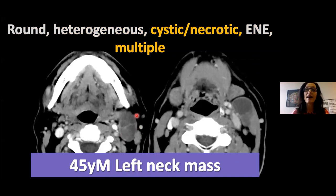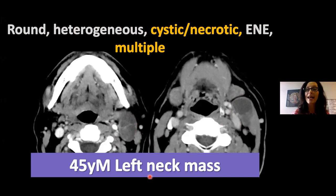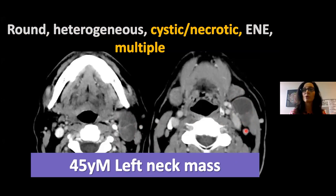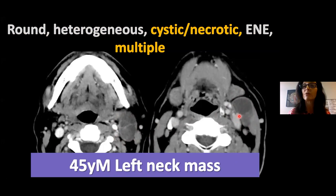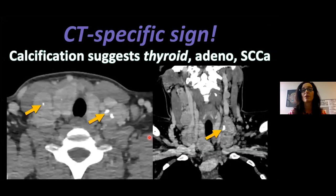Another case: a man presenting with a left neck mass. In the lateral neck, behind the submandibular gland, there is a cystic mass with a septation. This is not a branchial cleft cyst — a new neck mass in an adult is carcinoma until proven otherwise. This is cystic/necrotic, multiple lesions smashed together, with fairly sharp margins and no obvious extranodal extension — but it needs FNA. It turned out to be squamous cell carcinoma from the oropharynx. The primary was in the palatine tonsil and could not even be seen on imaging — proven metastatic squamous cell carcinoma.